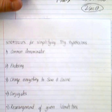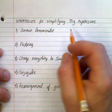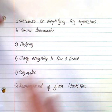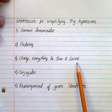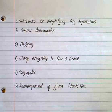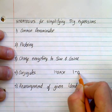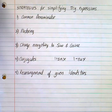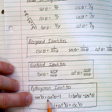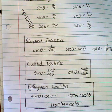Here are the key strategies for simplifying trig expressions. First, find a common denominator to combine two terms. Second, factor — factoring is still valid with trig functions. Third, convert everything to sines and cosines: change secant to 1 over cosine, cosecant to 1 over sine, tangent to sine over cosine, and cotangent to cosine over sine. Fourth, use conjugates to eliminate expressions like 1 plus sine x. Fifth, rearrange the given identities — recognizing that 1 minus sine squared theta equals cosine squared theta, or 1 minus cosine squared theta equals sine squared theta, is very useful.